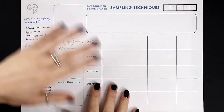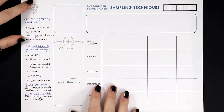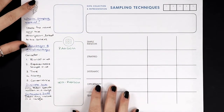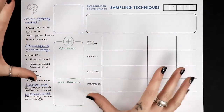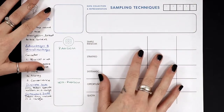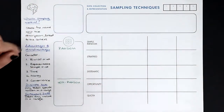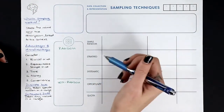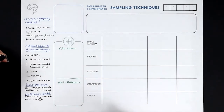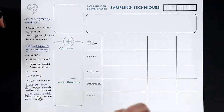In an ideal world we would do a census and find out exactly what was going on with everybody in the population, but in reality we have to use a sample. Why is this important and why should we consider it, apart from the fact that it's in the specification?